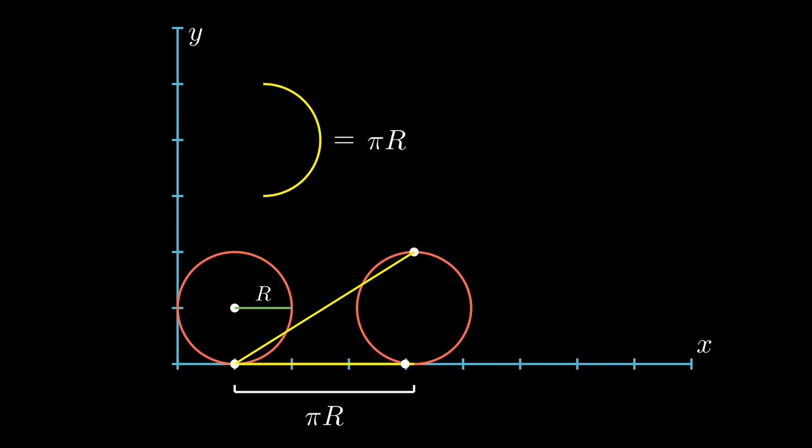We know the horizontal distance traveled is πR, and the vertical distance is twice the radius, or 2R.